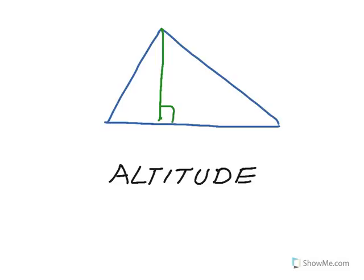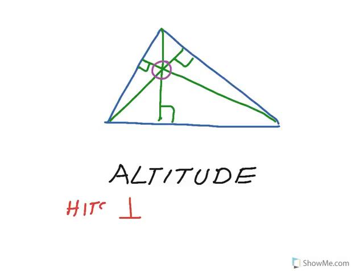Because there are three angles, every triangle has three altitudes. The altitude of the next angle hits at a 90-degree angle to that side. Coming out of the third angle and hitting perpendicular to the base is the third altitude. Just like with the medians, we'll talk later about where all three intersect. Altitude is perpendicular — it hits perpendicular to the opposite side, coming out of a vertex.